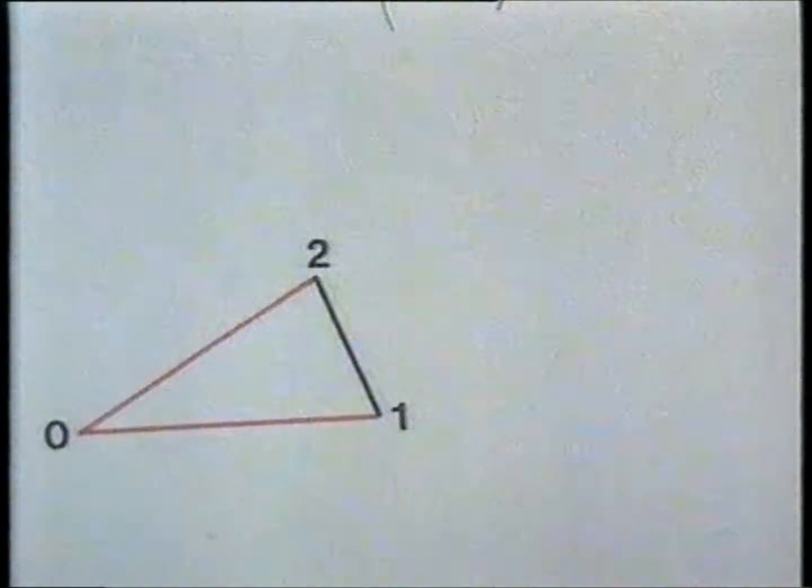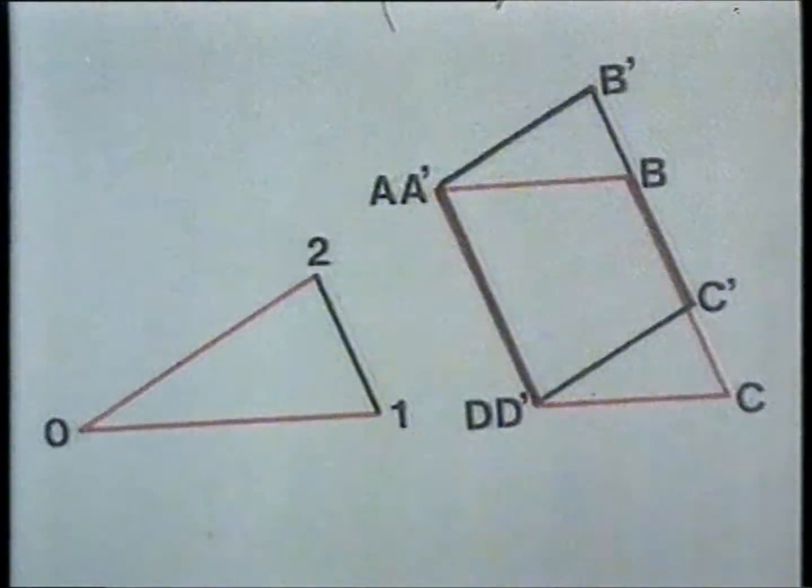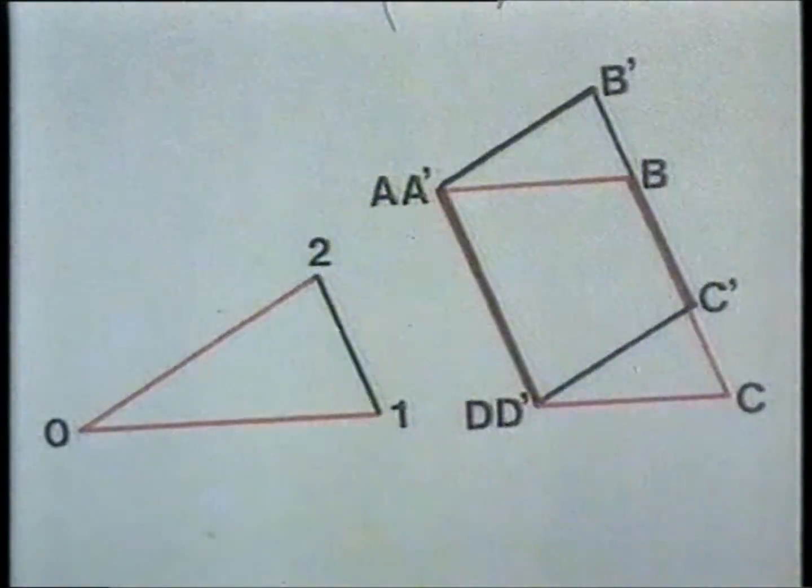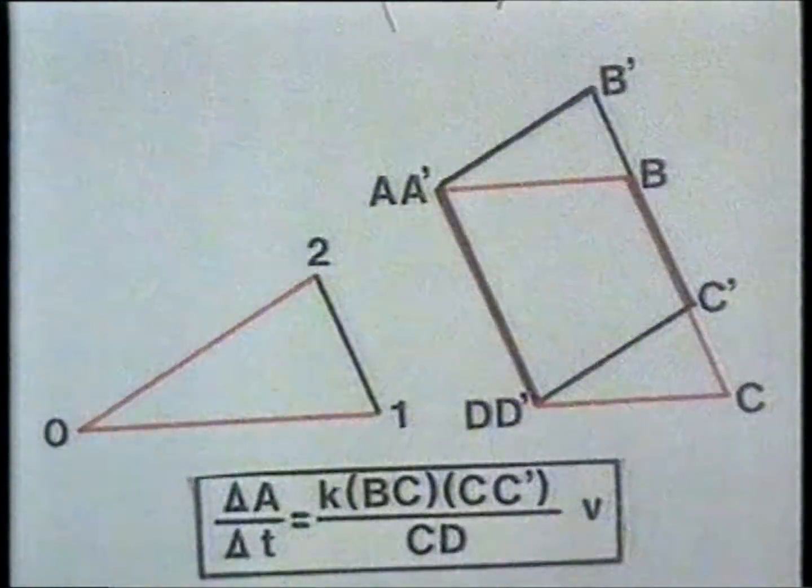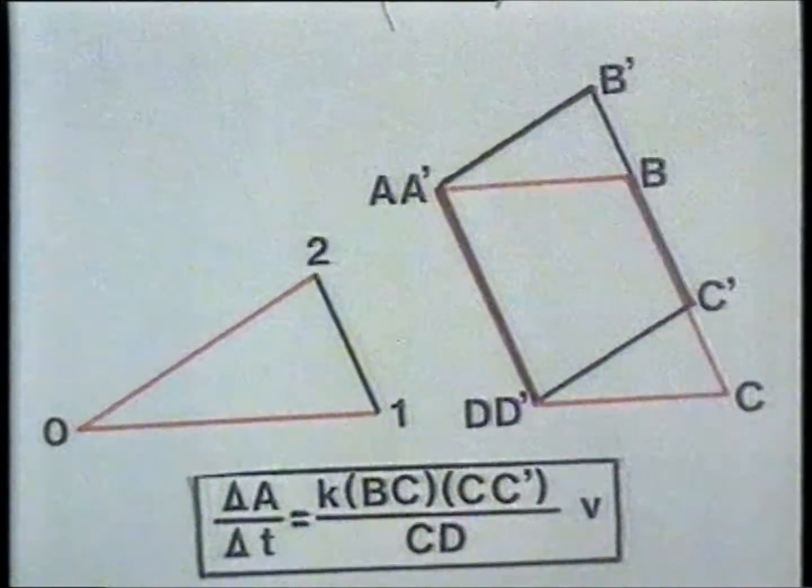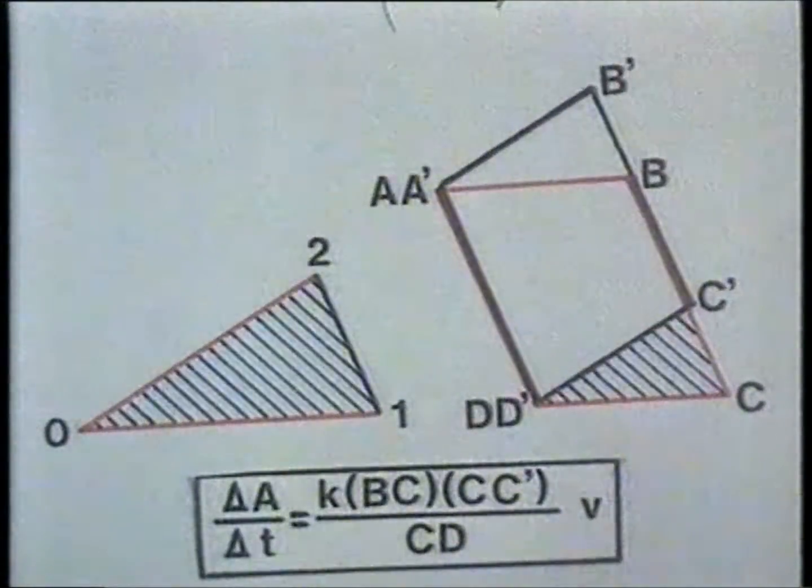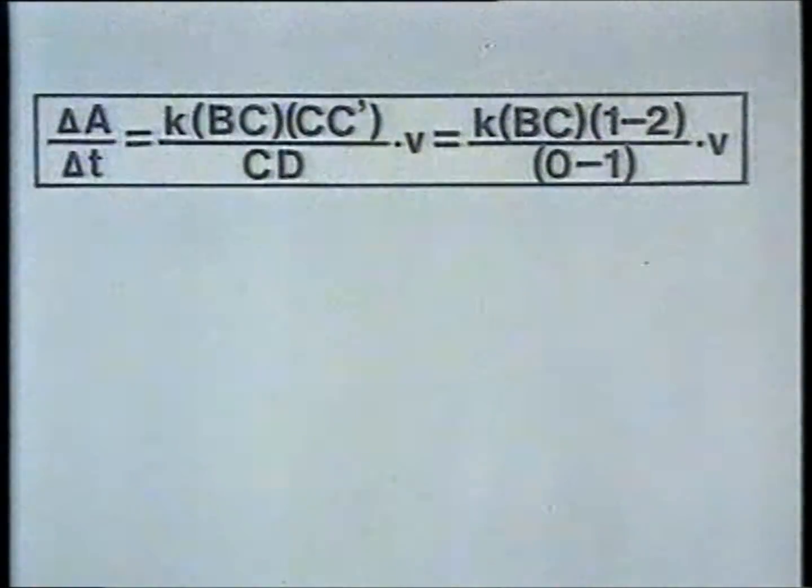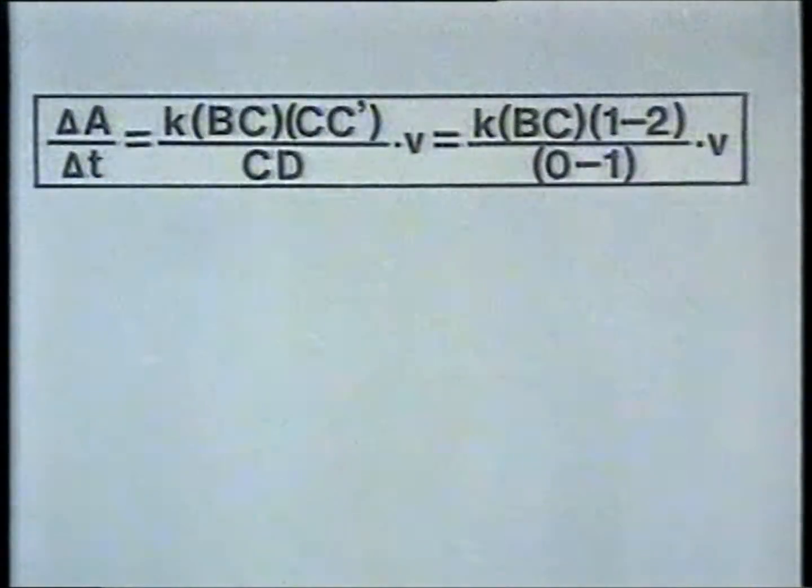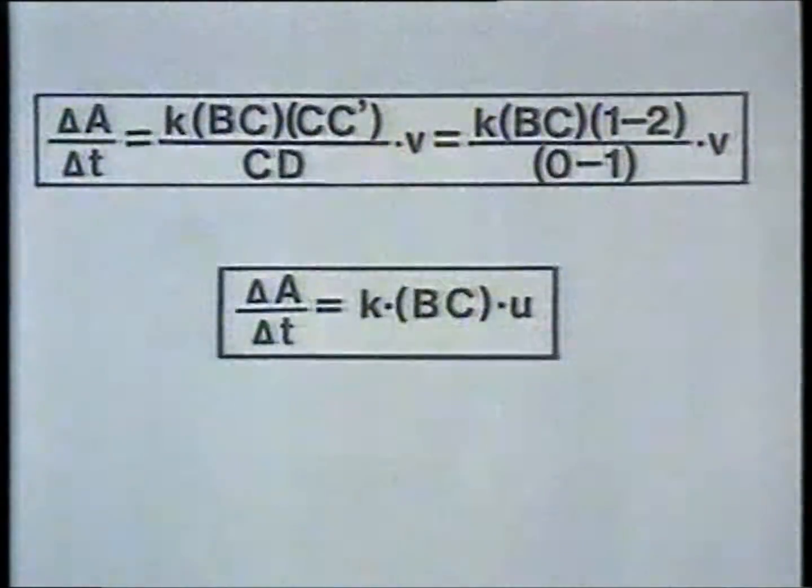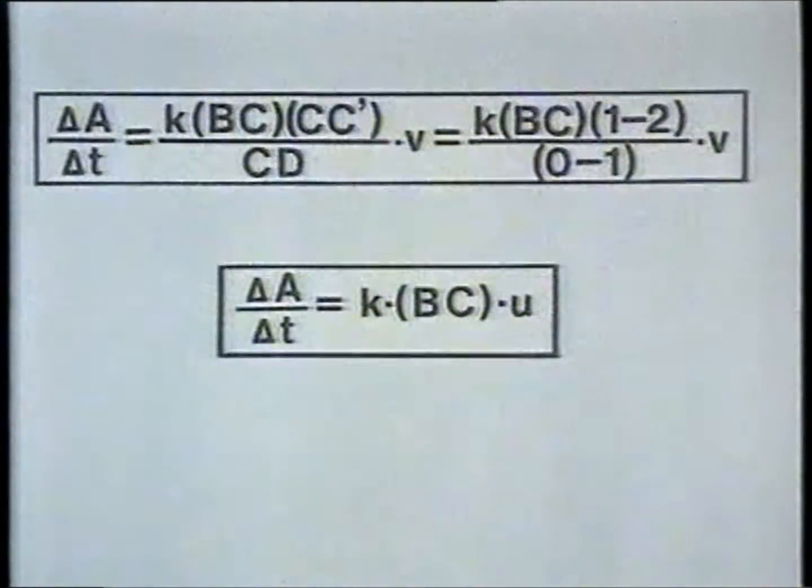Let's recapitulate this derivation. Here is the hodograph. Here are the undeformed and deformed elements and here is the expression for the rate of work. The two hatch triangles are similar and therefore the ratio cc prime to cd is equal to the ratio u to v where u and v are the velocity vectors earlier denoted by 1, 2 and 0, 1. Thus we get this expression.